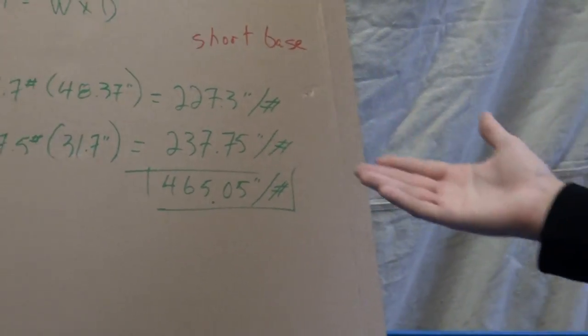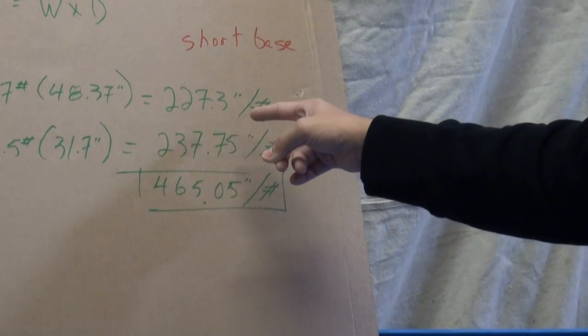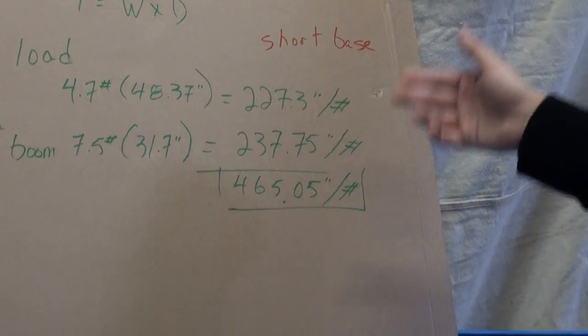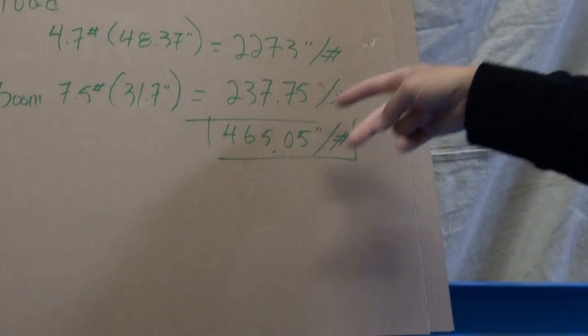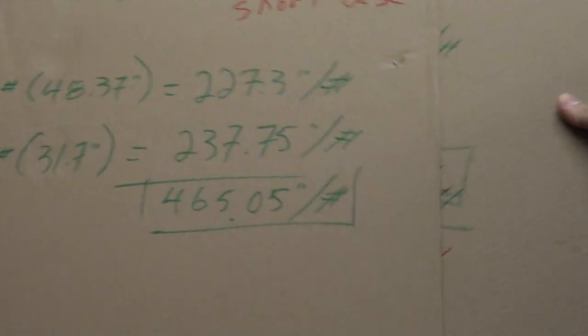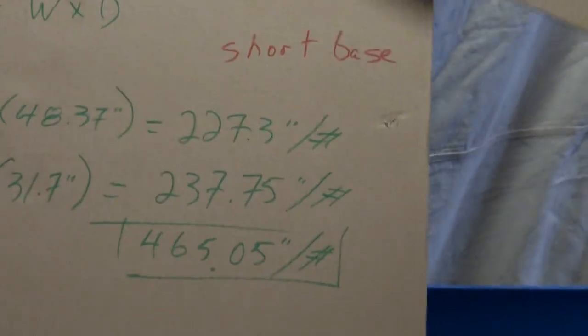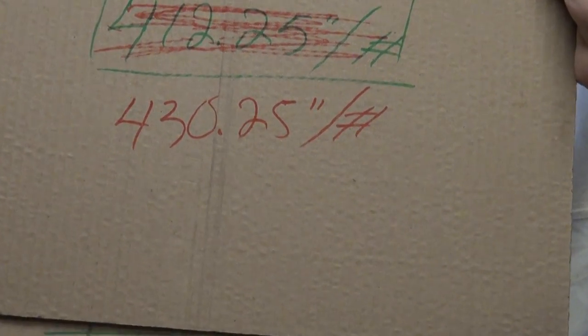Weight times distance, weight times distance. You get 227.3 inch pounds of torque, and 237.75 inch pounds of torque. Add those together, we get 465.05 inch pounds of torque. Compared to our tower side, you can see that's about 35 extra inch pounds of torque. And that's why it tipped over.